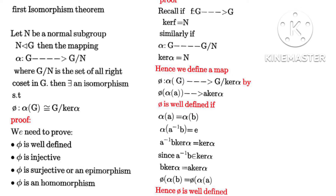Initially, if we have a function f mapped to G, then the kernel of f will give us N. That is, if f is mapped to G, the kernel of f will be the normal subgroup. Similarly, G/N is just the set of all the right cosets of N in G.